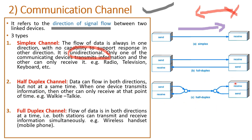The second is the half duplex channel. Here data can flow in both directions, but not at the same time. An example is the walkie-talkie. In the army, if the commander wants to give instructions to his team, he gives instructions and then says 'over.' Then after some time they reply, and the receiver says 'over.' Both of them cannot speak simultaneously — that is what is half duplex.